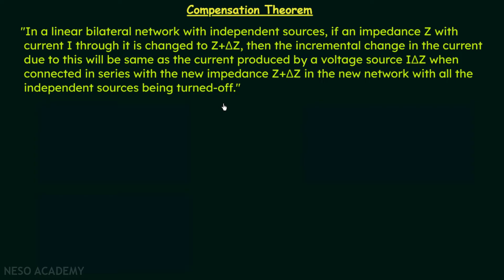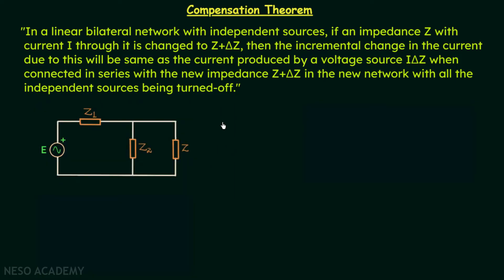We are going to understand this statement with the help of a network and decode it piece by piece. According to the statement, we should have a linear bilateral network with independent sources — like we have in this case. This is the independent source and the network has linear elements. We should also have an impedance through which a current flows. We have this impedance Z, and let's say the current through it is equal to I.